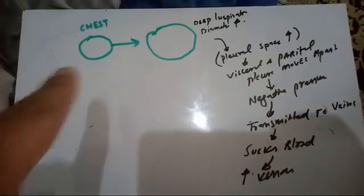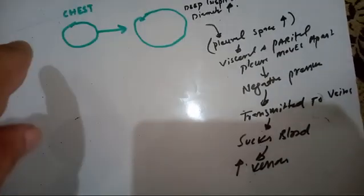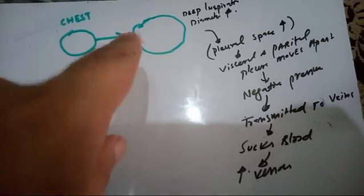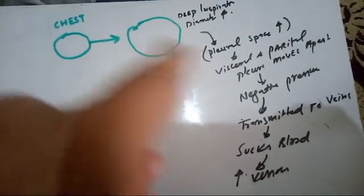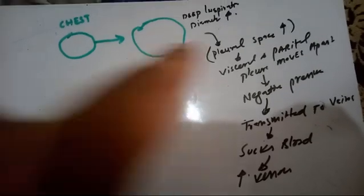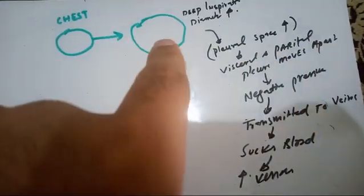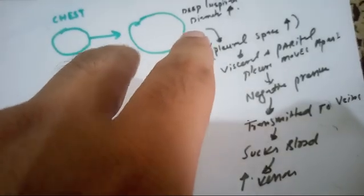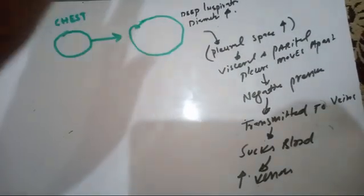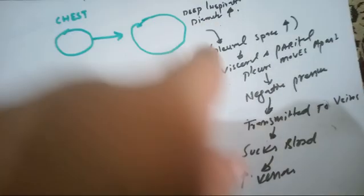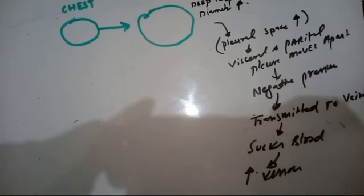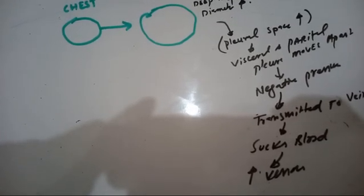Suppose this is the chest and we have taken a cross-section of the chest. During inspiration, the diameter of the chest increases. If the diameter of the chest increases, the pleural space also increases because the parietal pleura is attached to the chest wall and the visceral pleura is attached to the underlying lung. The parietal pleura is carried away by chest movement, so the distance between the visceral and parietal pleura increases — in other words, the pleural space increases.